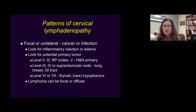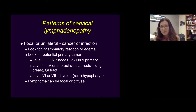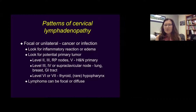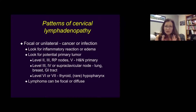Level 2, 3, retropharyngeal lymph nodes, and level 5 are most likely to have a neck primary. But if you see lower neck lymph nodes, look for systemic disease. Central compartment lymph nodes — think about thyroid or hypopharyngeal cancer.